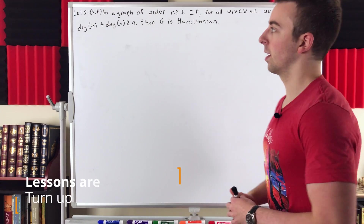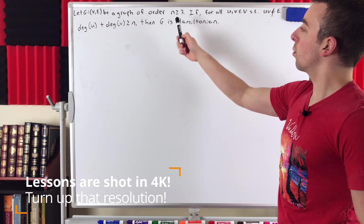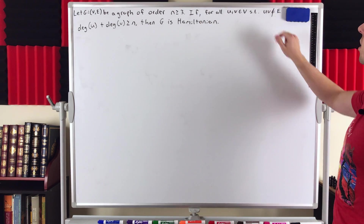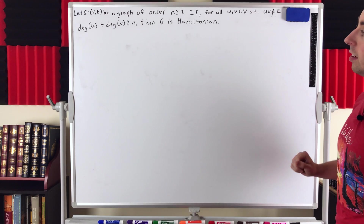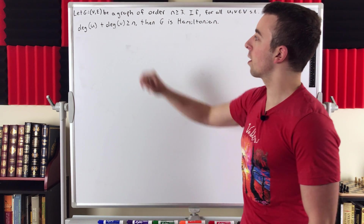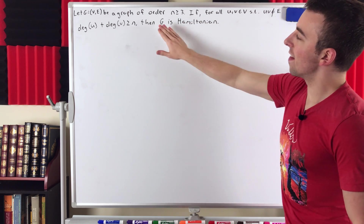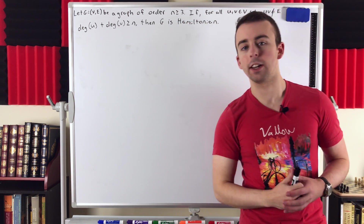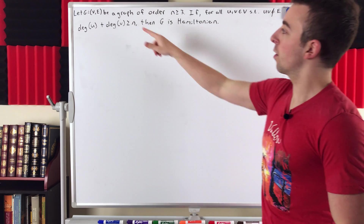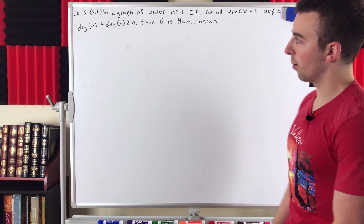We'll begin, of course, with the statement of the theorem. Let G be a graph with at least three vertices. If, for all non-adjacent vertices of G, the sum of their degrees is greater than or equal to N — the number of vertices — then G is a Hamiltonian graph. So this is a sufficient condition: if a graph meets this condition, then it is Hamiltonian.